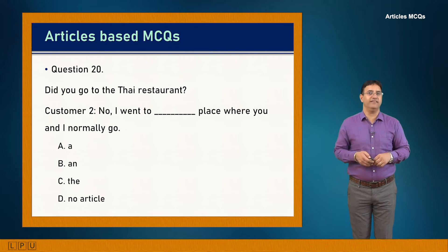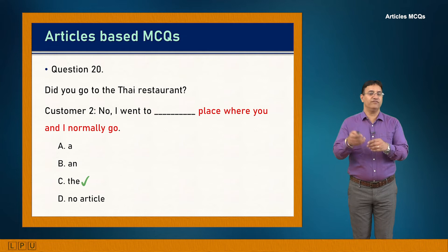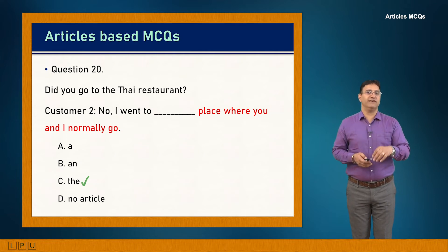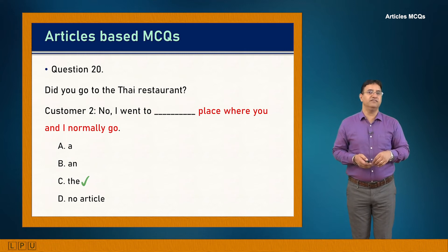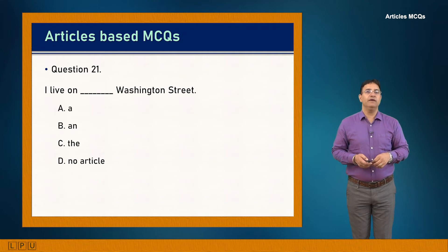Question 20: Did you go to the Thai restaurant? No, I went to dash place where you and I normally go. The clause 'where you and I normally go' identifies the place, making the noun definite. Answer is C: 'I went to the place where you and I normally go.'